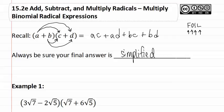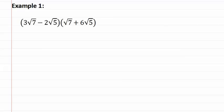Now let's see how this applies to using radical expressions in example one. Let's start by FOILing them, which means we need to do the first times the first. So we have a three times a one, which gives us three. We have square root of seven times square root of seven, which gives us seven squared.